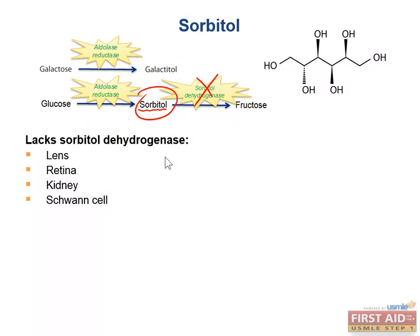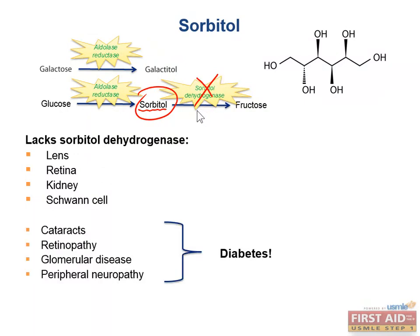In states of persistent hyperglycemia such as diabetes, you're going to have high sorbitol levels, and this can cause damage to the lens, the retina, the kidneys, and Schwann cells, since all of these only have aldose reductase and no sorbitol dehydrogenase. This can cause cataracts, retinopathy, and glomerular disease.